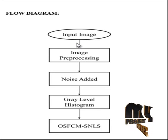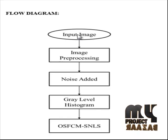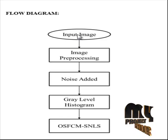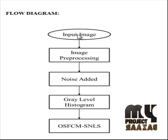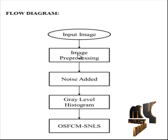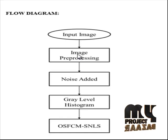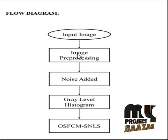Now let me discuss the flow diagram for our process. First, we capture the input image from the dataset folder. Next, in the image pre-processing stage, pre-processing is the process of removing noise from the image. Noise removal involves removing noise as well as smoothing the image using filters. The commonly used and effective filter for noise removal is the Gaussian filter.